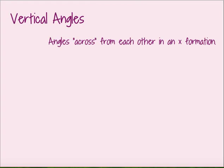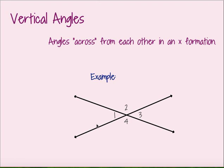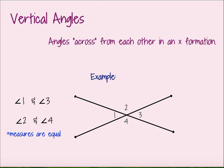Vertical angles actually require two lines that form an X formation. Here we have two lines that form an X — and they don't have to be full lines, they can just be line segments. Notice how that X formation creates four different angles. Angles that are across from each other, like angles 1 and 3, are called vertical angles. 2 and 4 are also a pair of vertical angles. Because the measures of angle 1 and angle 2 add to 180, and so do angles 2 and 3, that means angles 1 and 3 have to be equal to each other. So just know that when you have a pair of vertical angles, their measures are always equal.